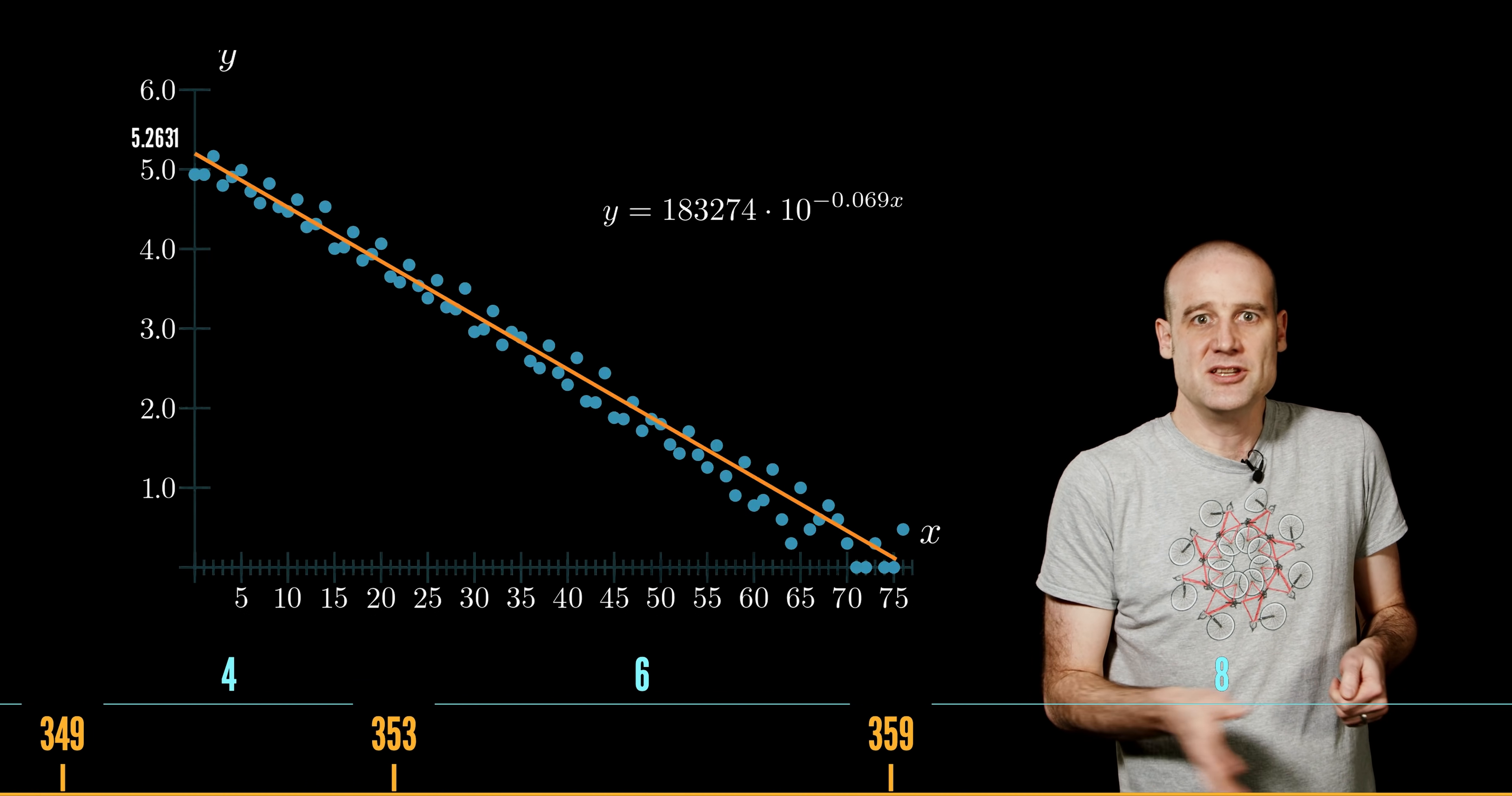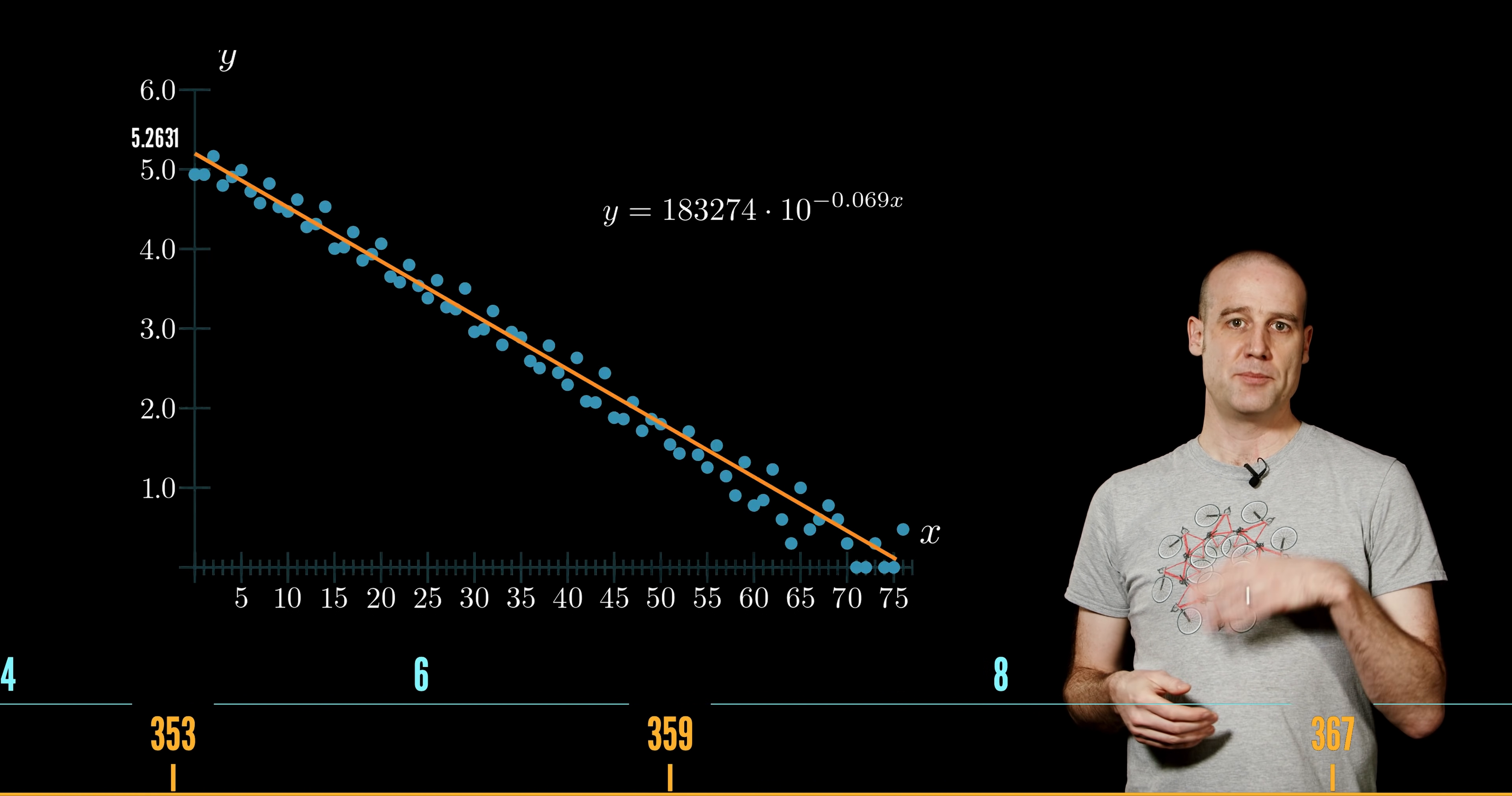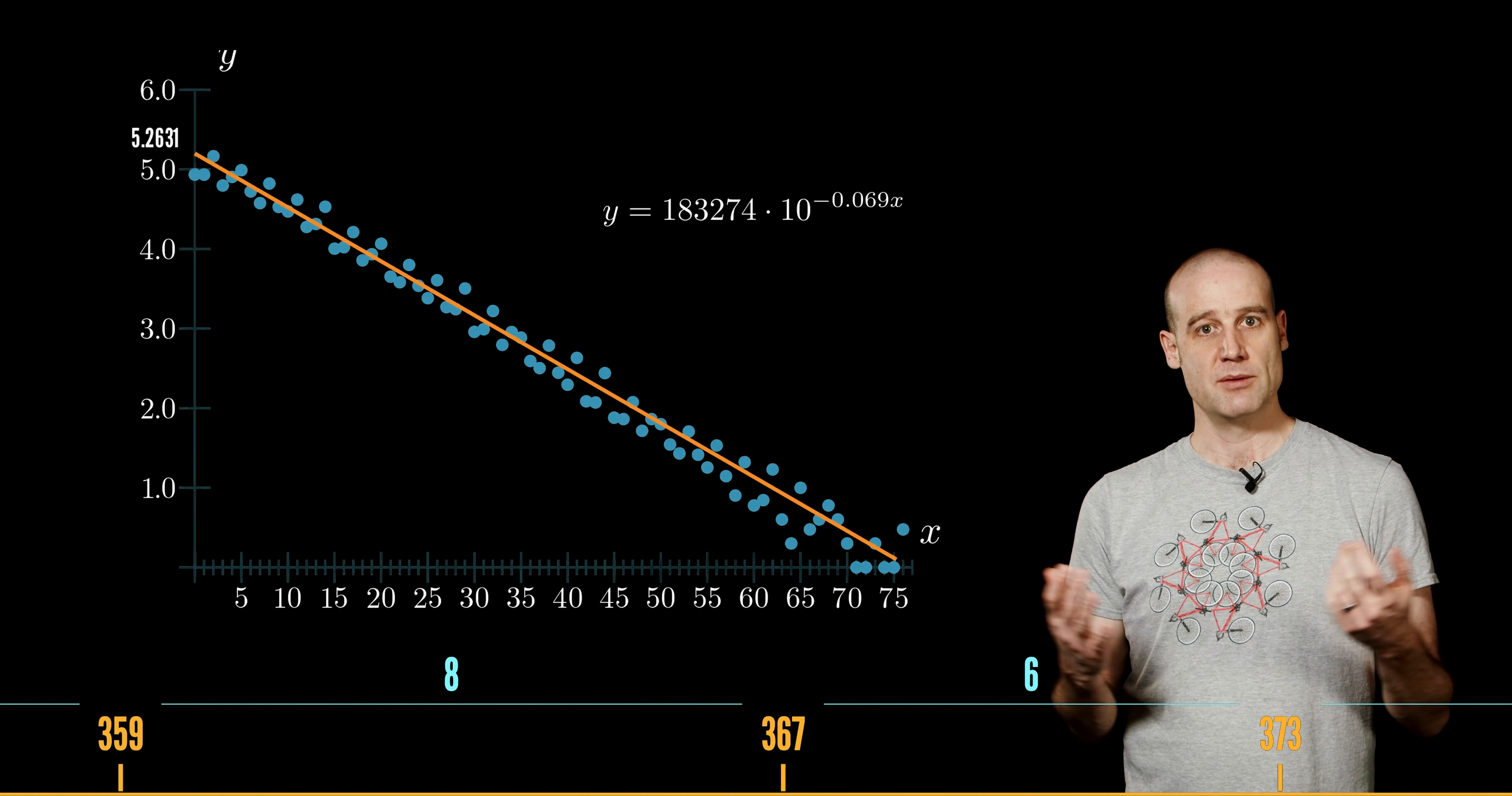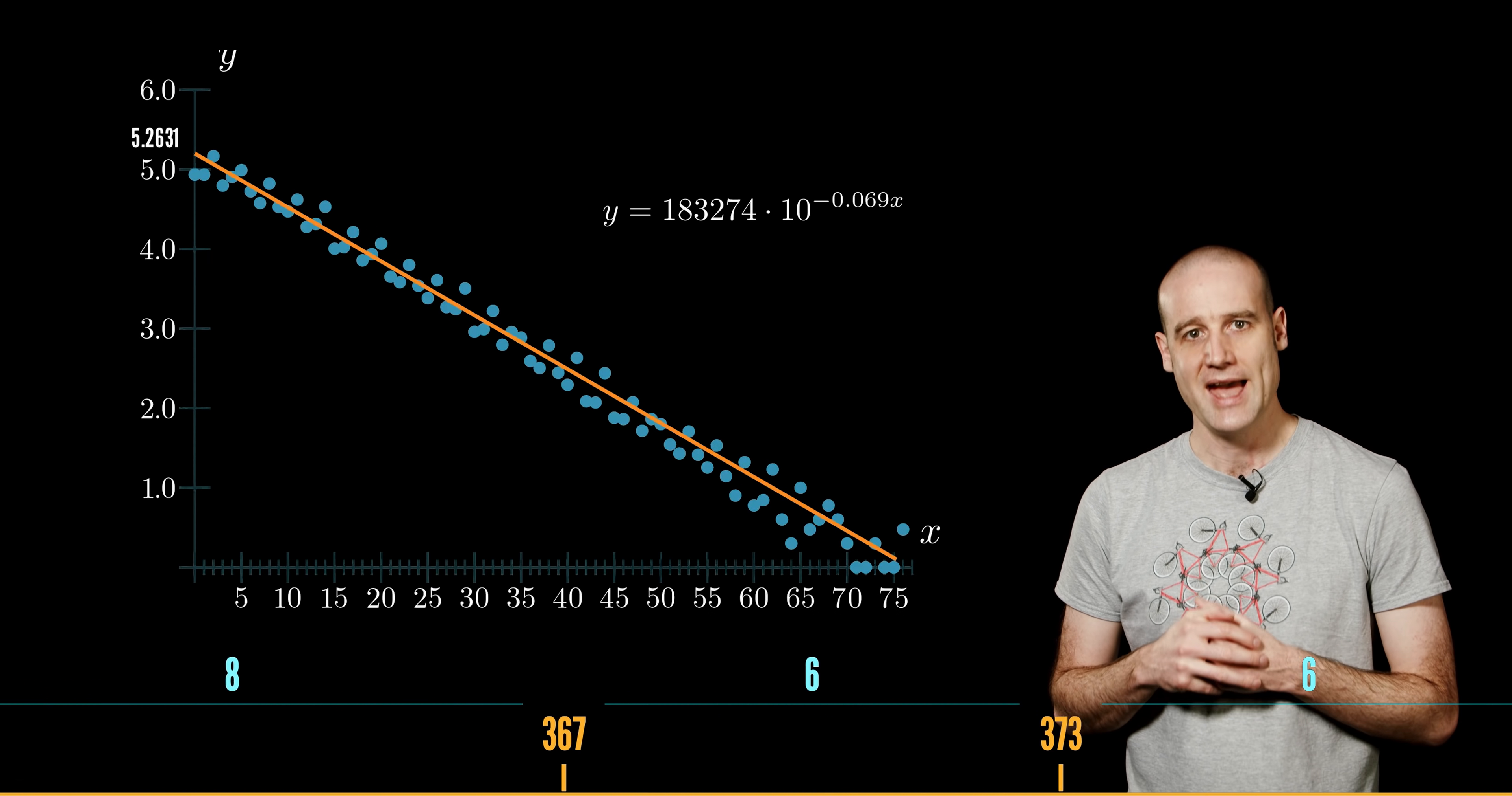Then you multiply 10 to the power of our original gradient of negative 0.0691, managed to memorize that somehow, times x.